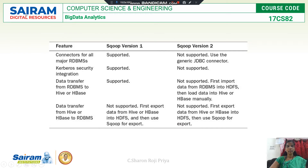These are some of the differences between Sqoop version 1 and version 2. Connectors are supported by version 1 and not supported by version 2. In version 2, it is JDBC connectivity. Kerberos security integration is supported by version 1, but version 2 does not support it. Data transfer from RDBMS to Hive or HBase is supported by Sqoop version 1 and not supported by Sqoop version 2.